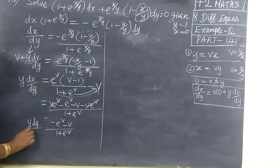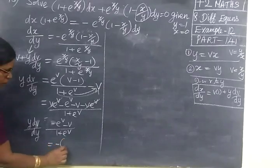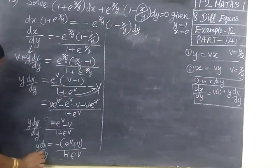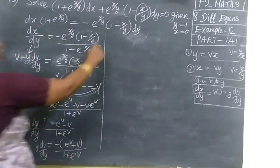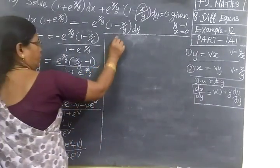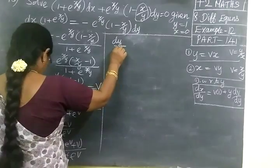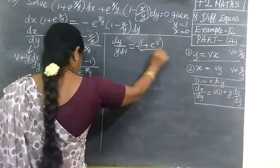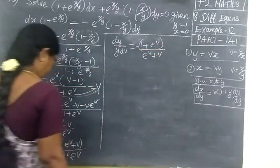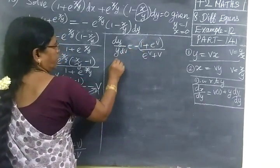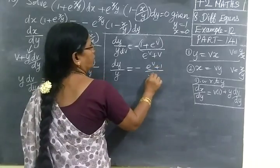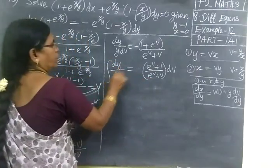So y into dv by dy equal to minus of (e power v plus v) divided by (1 plus e power v). Now you can reciprocate and write: dy by y equal to minus of (e power v plus 1) divided by (e power v plus v) dv. Now take dv to this side. So dy by y equal to minus of (e power v plus 1) by (e power v plus v) dv. Now integrating on both sides.